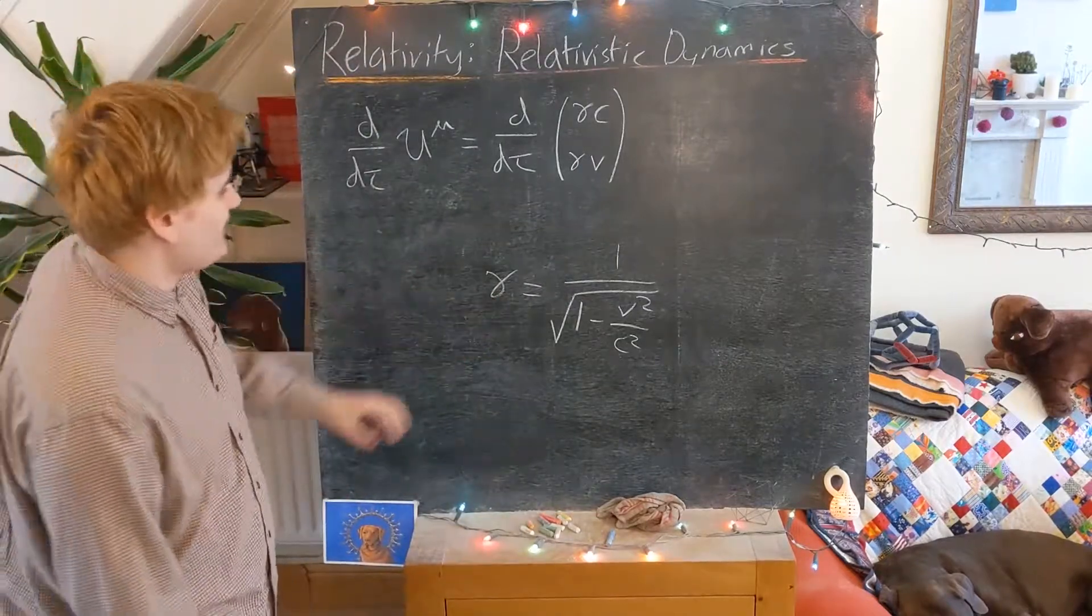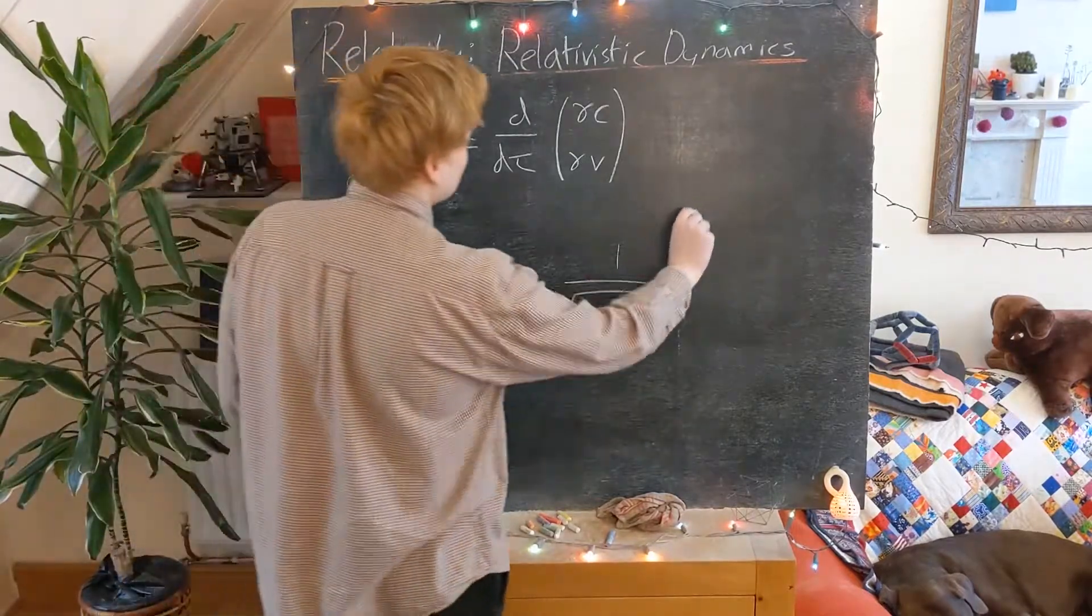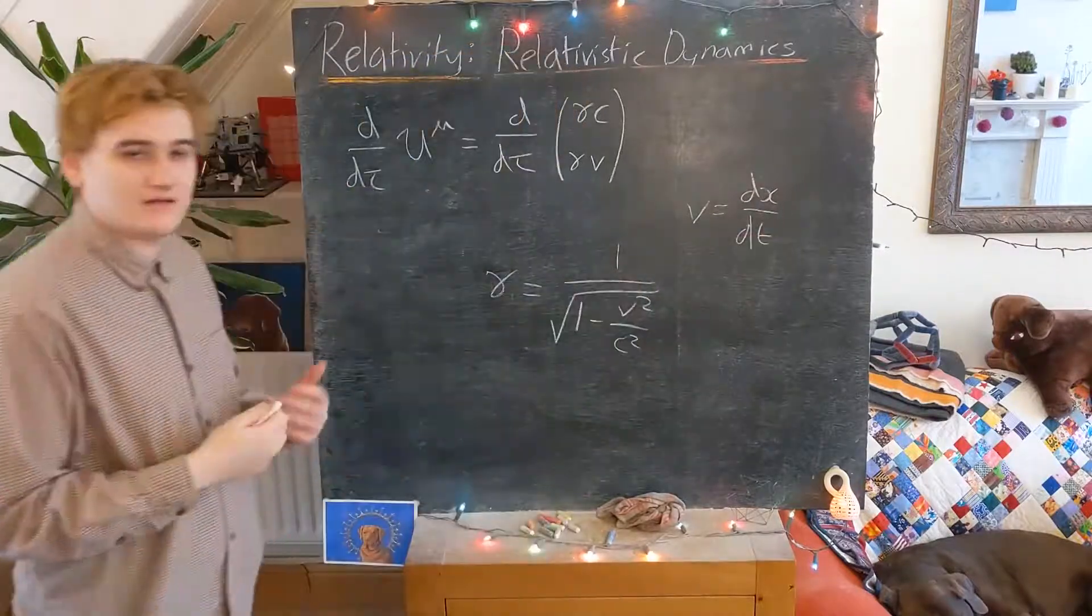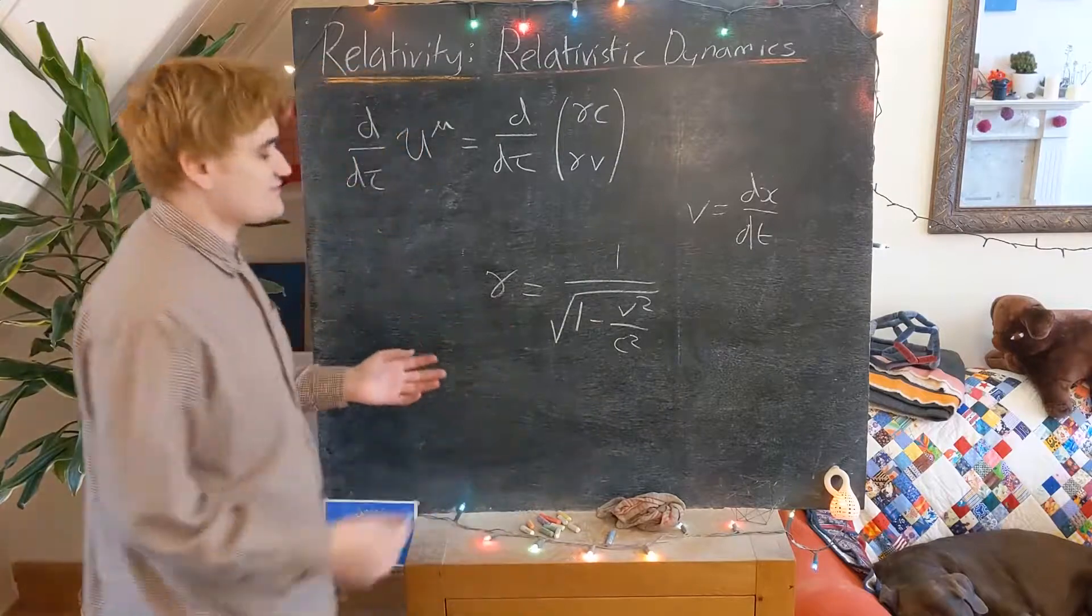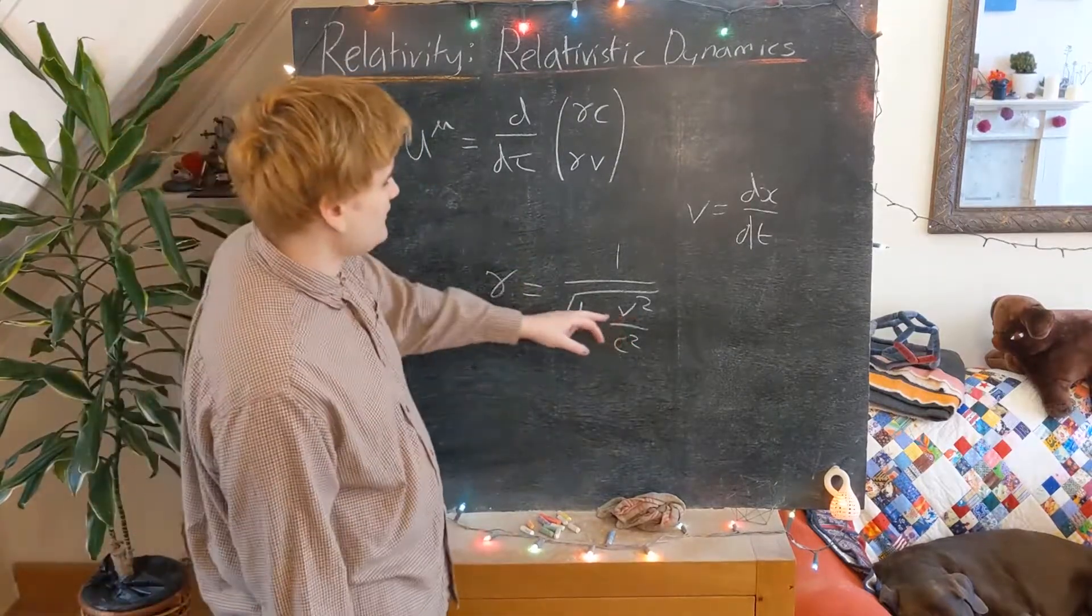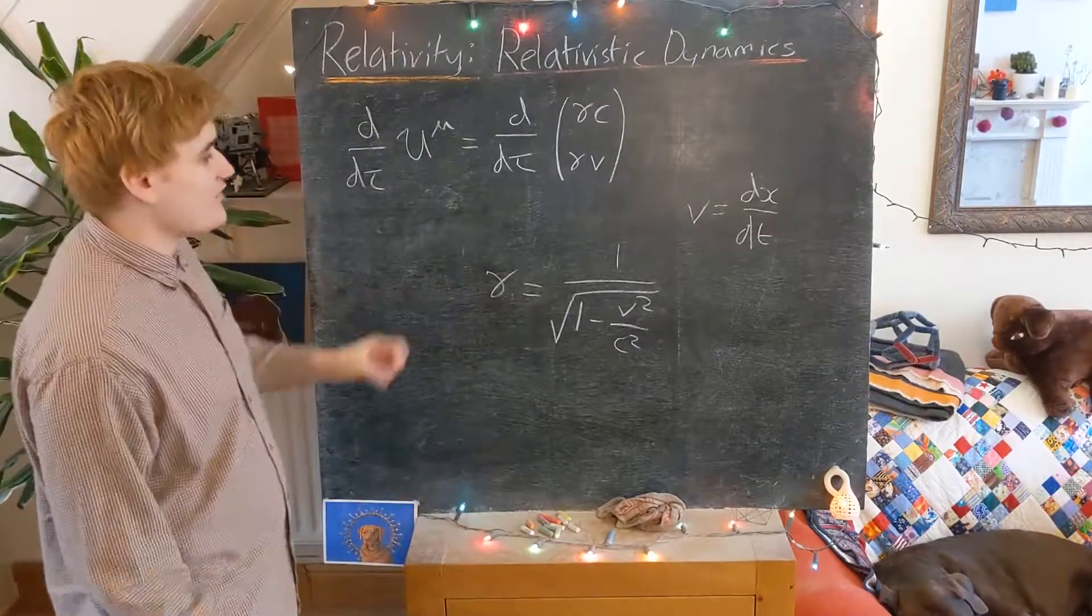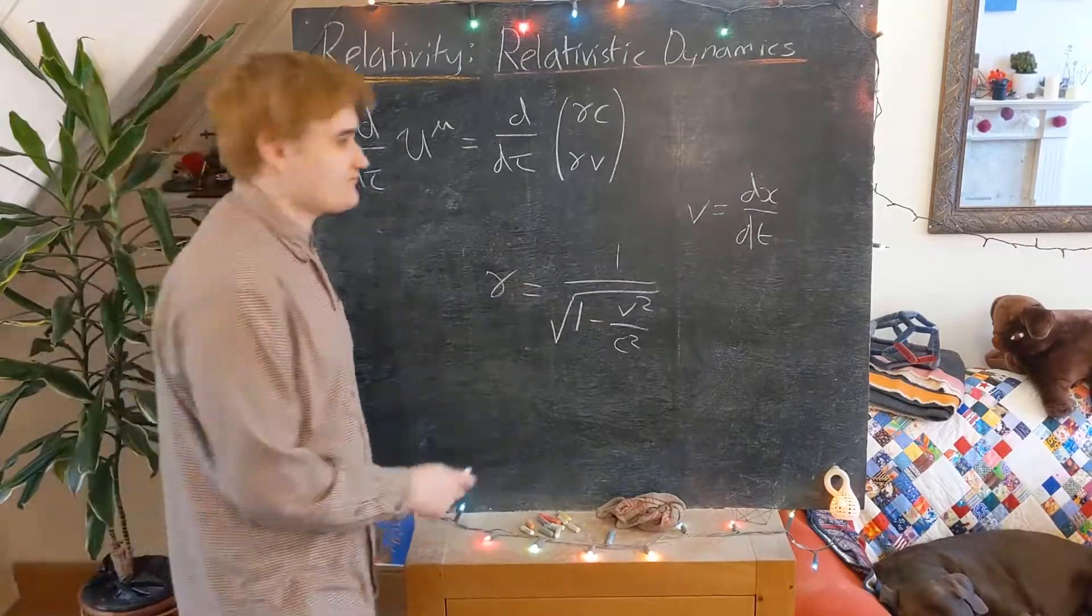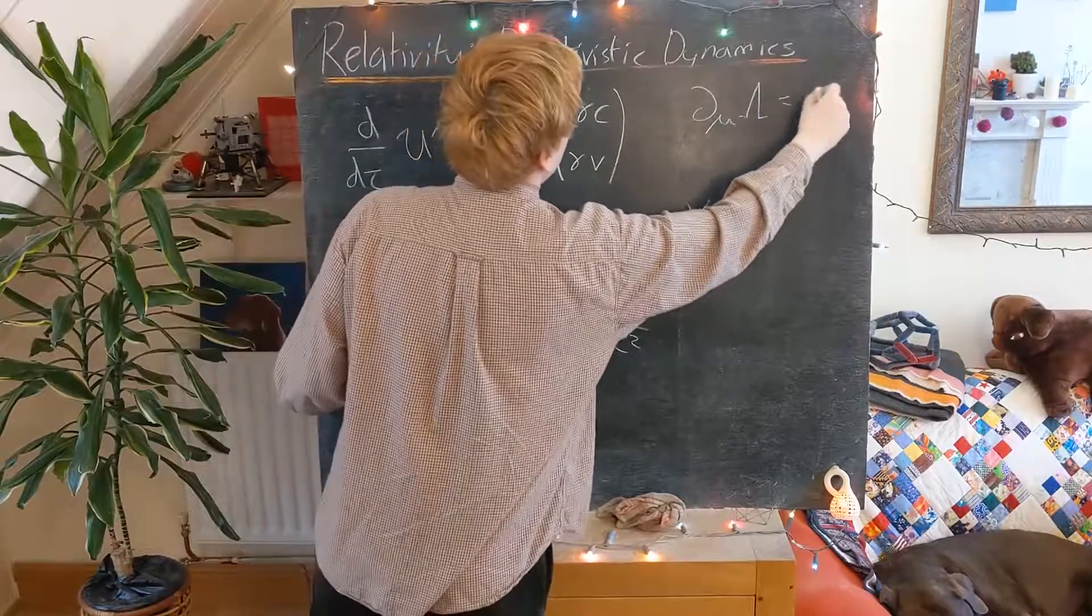So we have to realize now that this gamma is effectively becoming a function of our coordinates, because this v was a derivative, and so we can now then realize that such a Lorentz transformation is no longer going to be a Lorentz transformation, because the Lorentz transformation matrix, which depends on gamma, is now going to depend on the coordinates. It's not going to be a linear transformation where we have the derivative being zero.